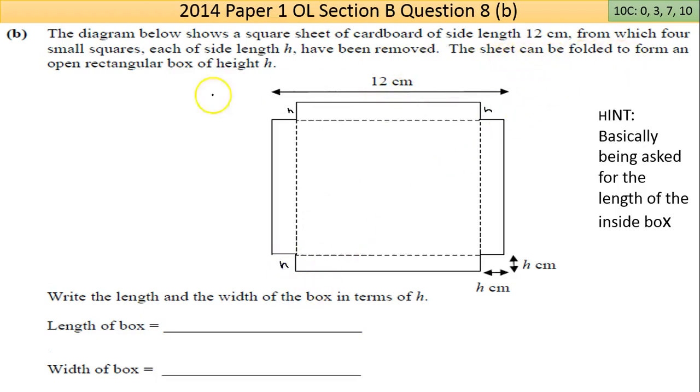The sheet can be folded to form an open rectangular box of height h. So if these corners fold up, you'll have a little box height h. Now we're looking at volume, potentially something that's going to be asked here.